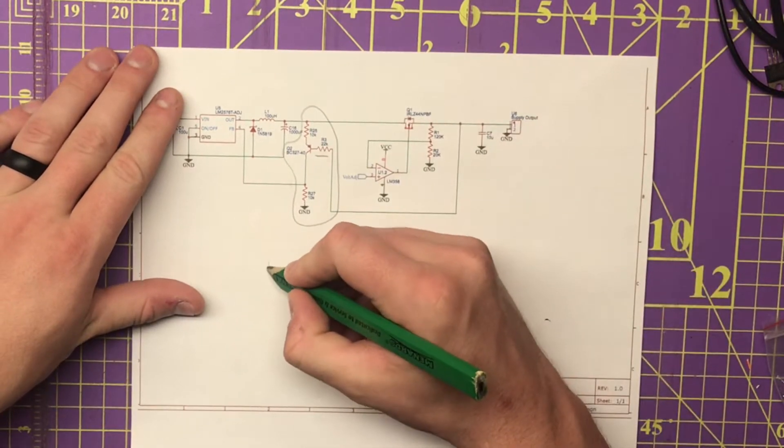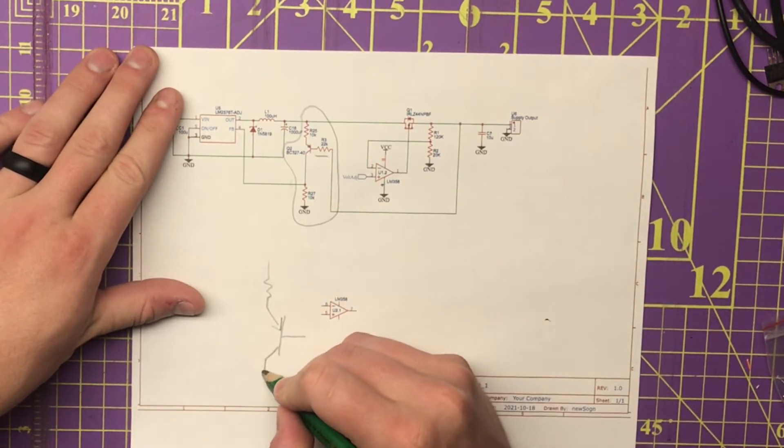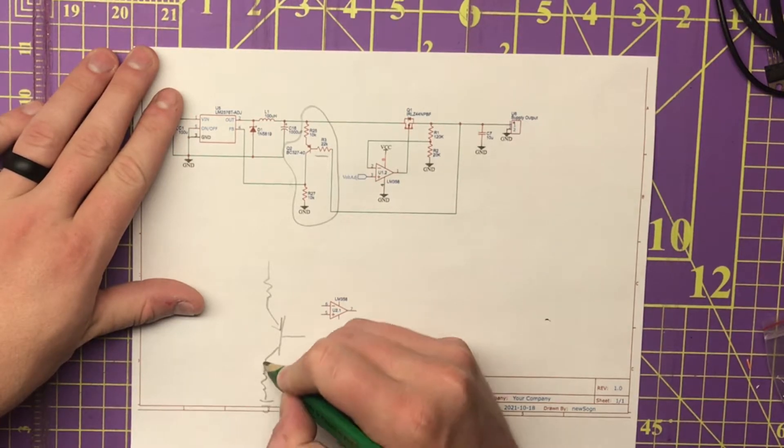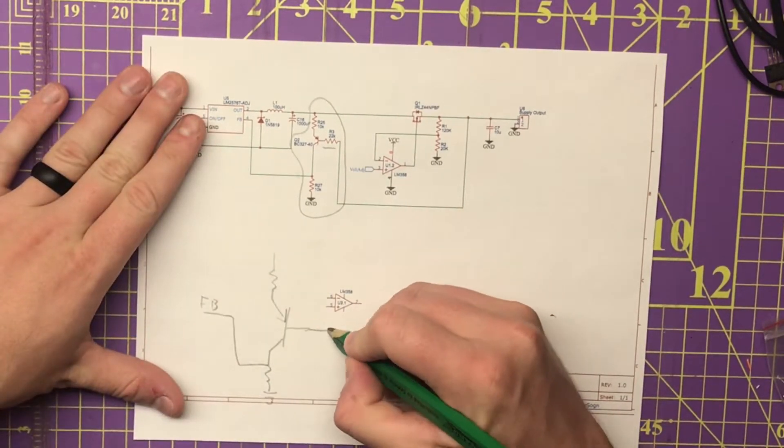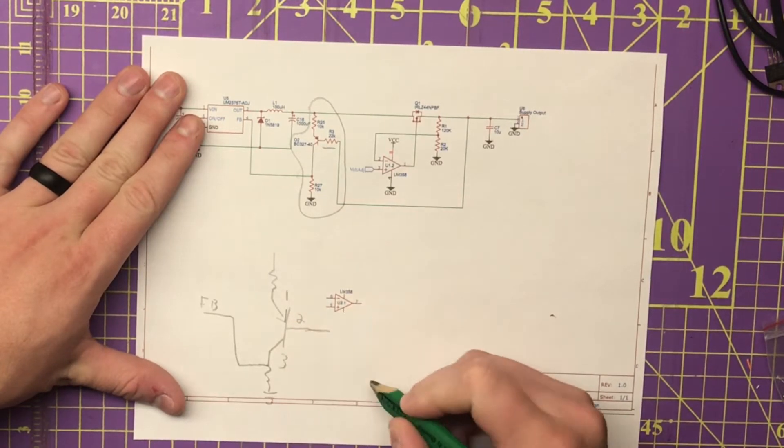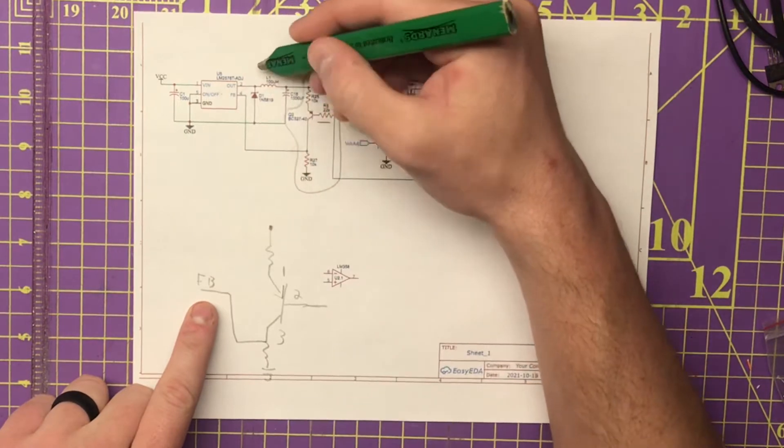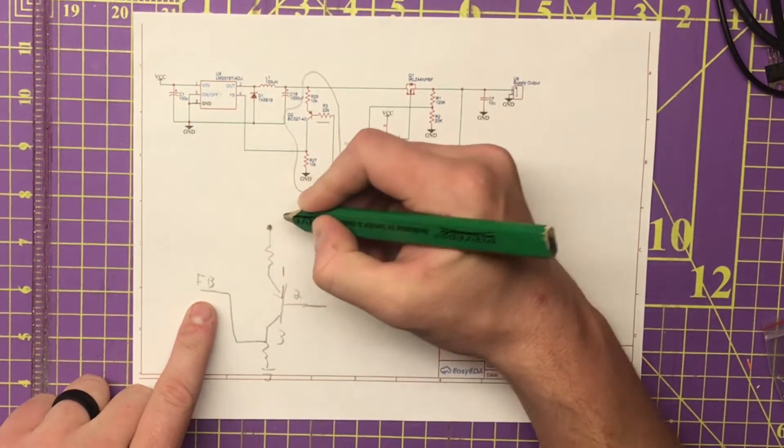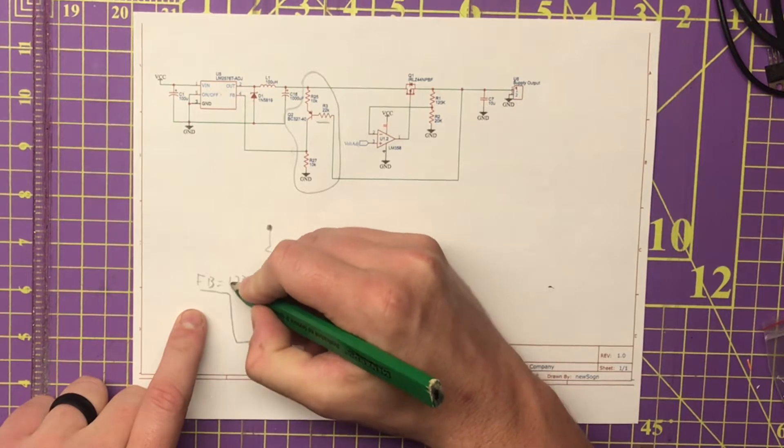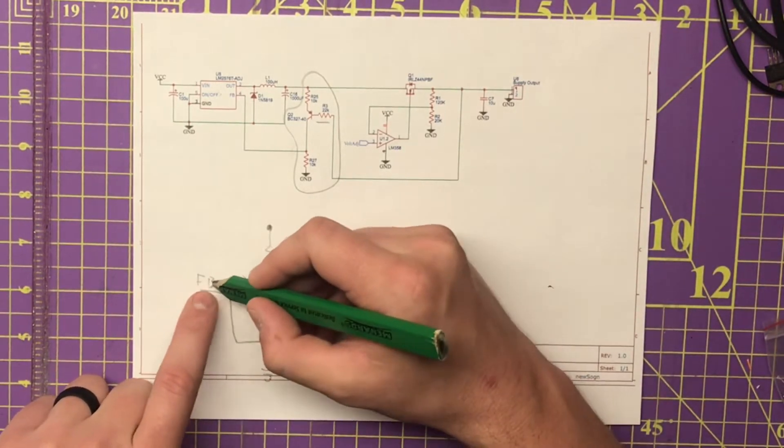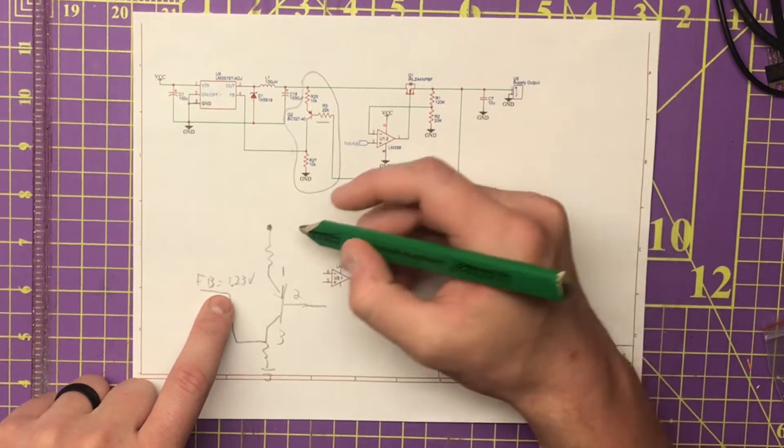I'm going to just kind of draw that a little bit better here. I'm going to label these one, two, and three. So remember this feedback is going to do everything. This chip over here is able to influence this point right here so that this feedback is equal to 1.23 volts. Remember that. If this feedback is lower, this will be higher. If this feedback is higher, this will be lower. Then it goes off, does its thing.